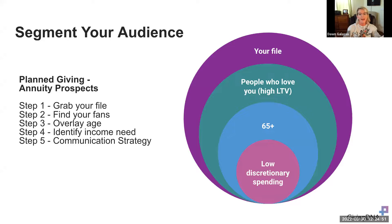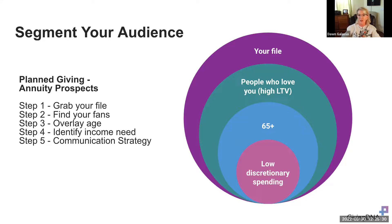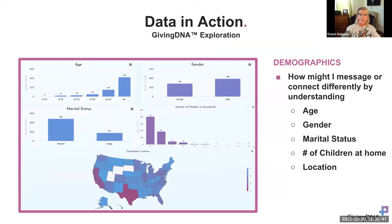Another example is planned giving for annuities. Take your file and look for people who are your fans — they give frequently, gave recently, and are committed to your organization. Overlay age, focusing on over 65, because an annuity provides income back to the donor and that age group is more likely to be on a fixed income. Then look for low discretionary spending — not much left after paying bills — making annuity ideal: they give you funds, you use them, and they receive monthly income back. Giving DNA makes it easy to pull this segment.